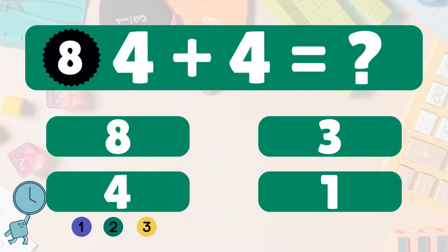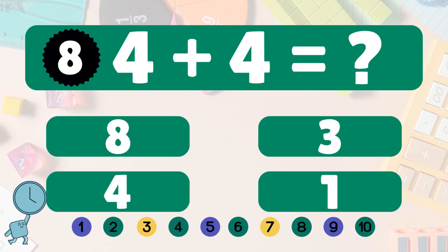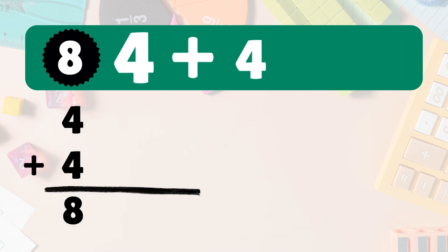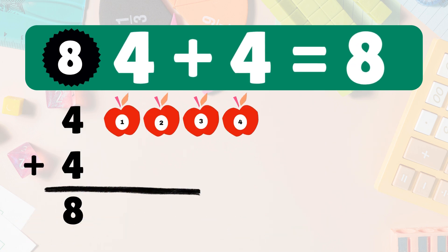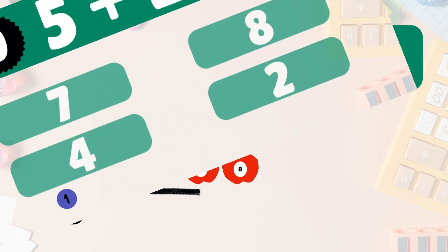4 plus 4 equals what? 4 plus 4 is 8. We start with 4 apples. Add 4 more. Let's count. 1, 2, 3, 4, 5, 6, 7, 8. So 4 plus 4 is 8. You're doing great. Next.